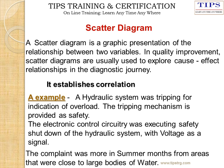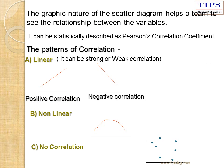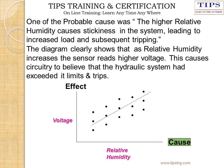The next tool is the Scatter Diagram — a graphical representation of the relationship between two variables. In quality improvement, scatter diagrams are used to explore cause and effect relations. Correlation patterns can be linear or non-linear. In the example given, higher relative humidity causes stiffness in the system leading to increased load. These values are plotted on the scatter diagram, showing the data distributed in a positive manner, meaning relative humidity and voltage have a positive relationship.